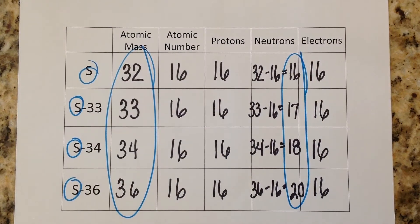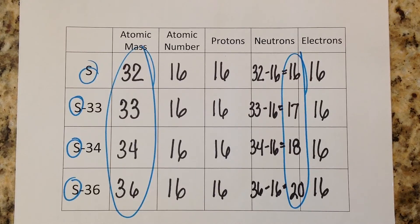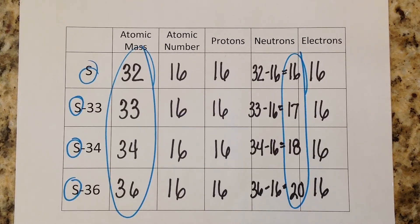That sums up isotopes. Now you should know how to calculate protons, neutrons, and electrons for a plain neutral atom, and how to calculate protons, neutrons, and electrons when you are given a specific isotope of an atom.